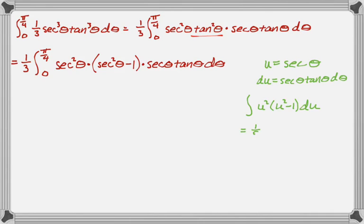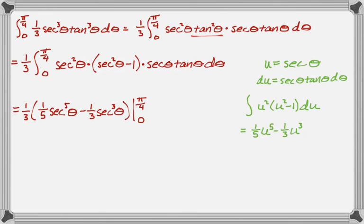And I can integrate that. So that's 1 fifth u to the fifth minus 1 third u cubed back to the normal integral. So that's going to be 1 third, 1 fifth secant to the fifth minus 1 third secant cubed. And then from 0 to pi over 4. And this is gross.